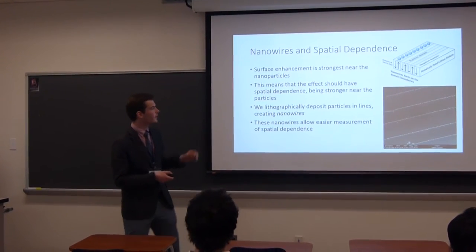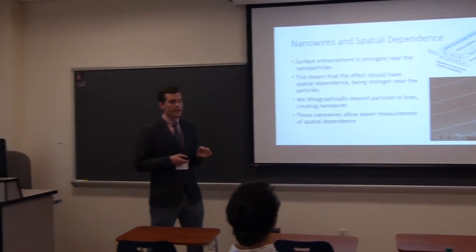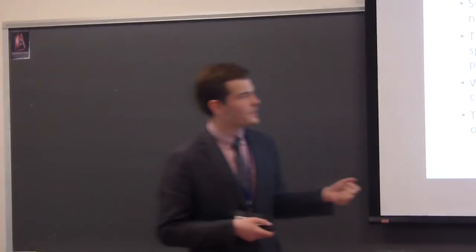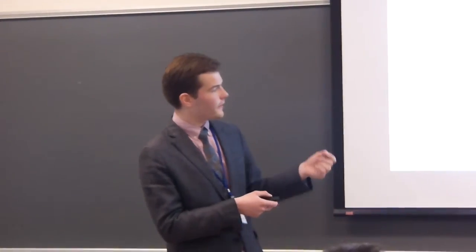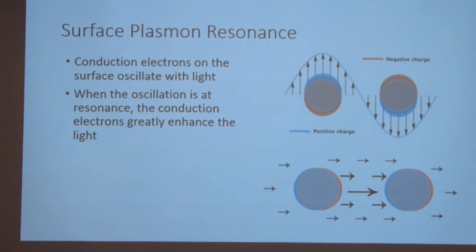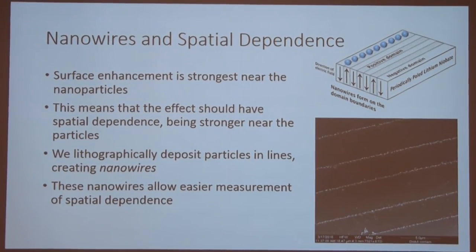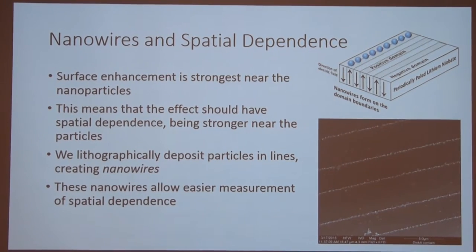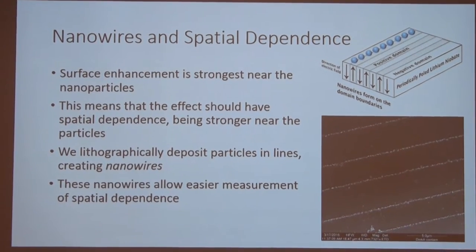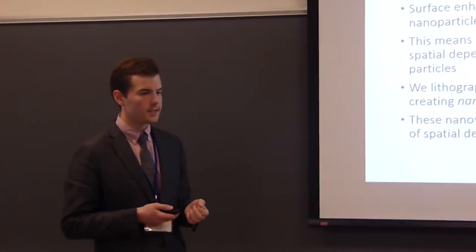And, hence the term nanowires. They're not really contiguous, but they look kind of like wires. So, the wires have the advantage that that second picture that you saw before, this guy, that's where we're going to get that strong enhancement, that in-between-the-particles enhancement. And so, the wires, you have lots of little tiny spaces between silver particles. So, they should be a good candidate for surface enhancement.